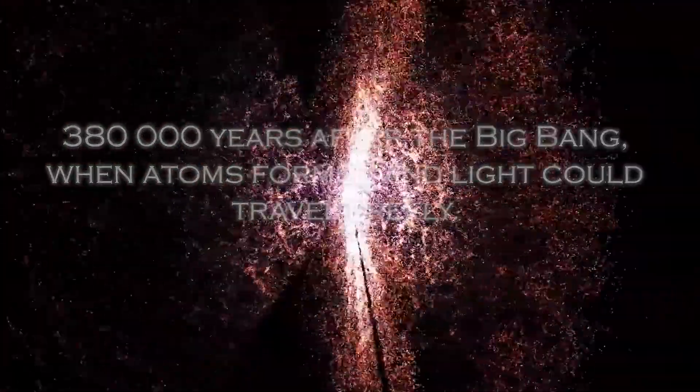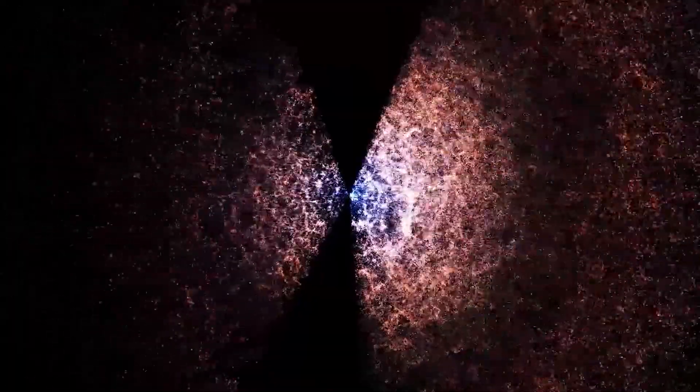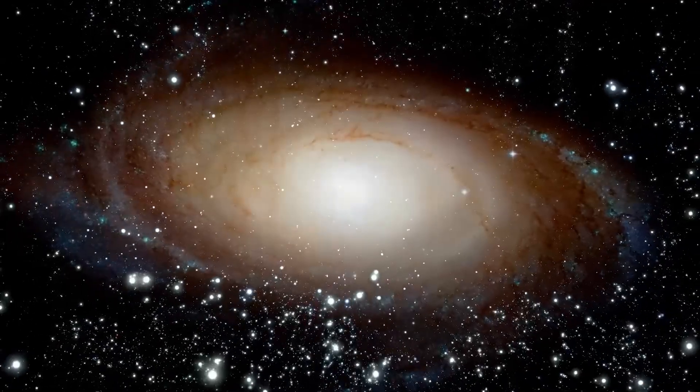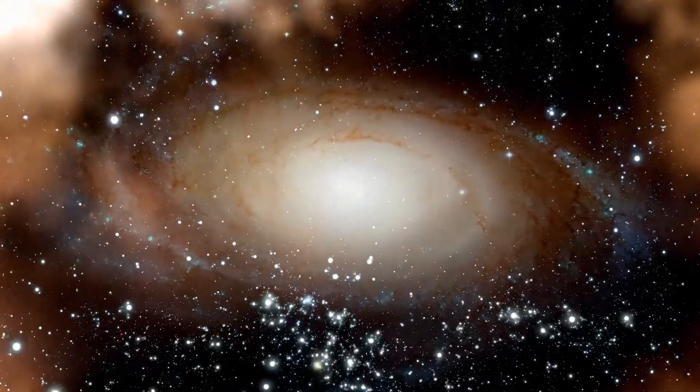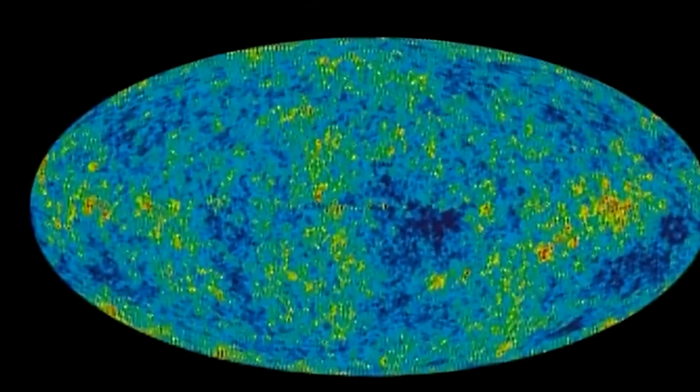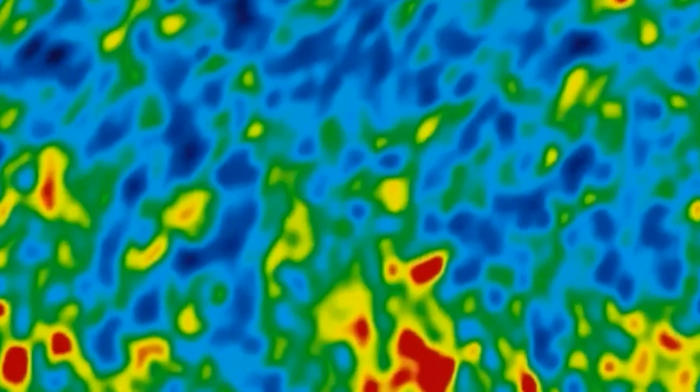The abundance of primordial elements such as hydrogen, lithium, beryllium, and boron matches predictions of the Big Bang's nuclear synthesis. The galactic distribution reflects how matter has clustered under gravity over time, forming stars and galaxies from small fluctuations.